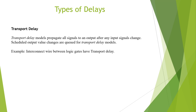The next type of delay we'll discuss is the transport delay. Transport delay models propagate all signals to an output after an input signal changes. The scheduled output value changes are skewed for transport delay models. An example of a transport delay is the interconnect wire between the logic gates.